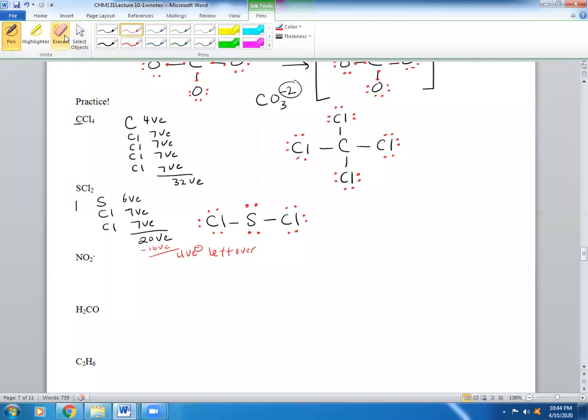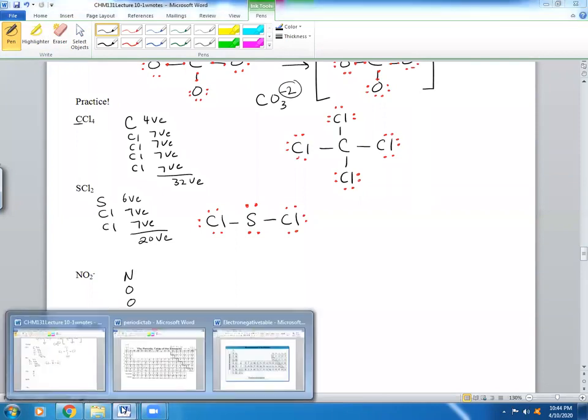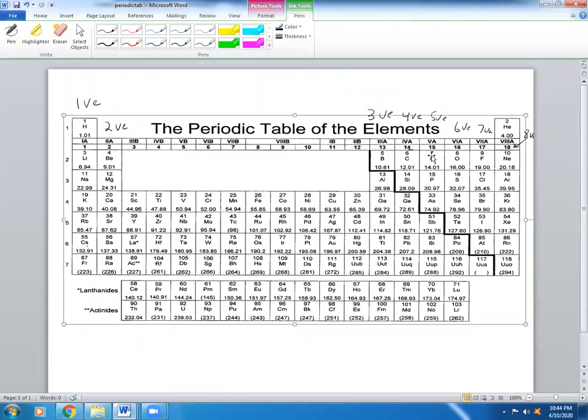Let's move on to the next one. NO2-. So we have N, 2 O's. Let's go find their valence electrons. By the way, all of those problems you should attempt them, pause before, and then check with my answer. So if I were you, I would pause right now and do the problem.